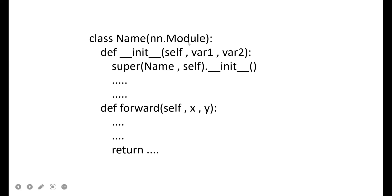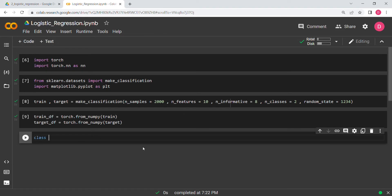You have to inherit from nn.Module, then define the __init__ method — this is the constructor. Pass in some variables, and the next line is super(LR, self).__init__(). Then you define your layers. After that, you define a forward function, passing self and some variables, and at the end you need to return something. This is the basic structure for declaring any model in PyTorch.